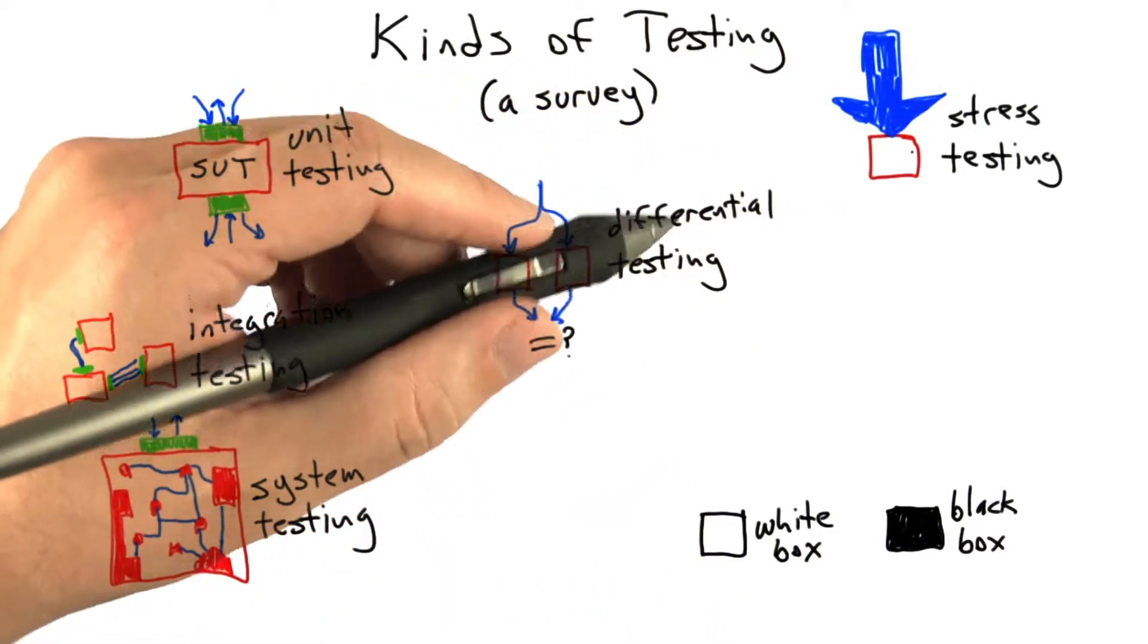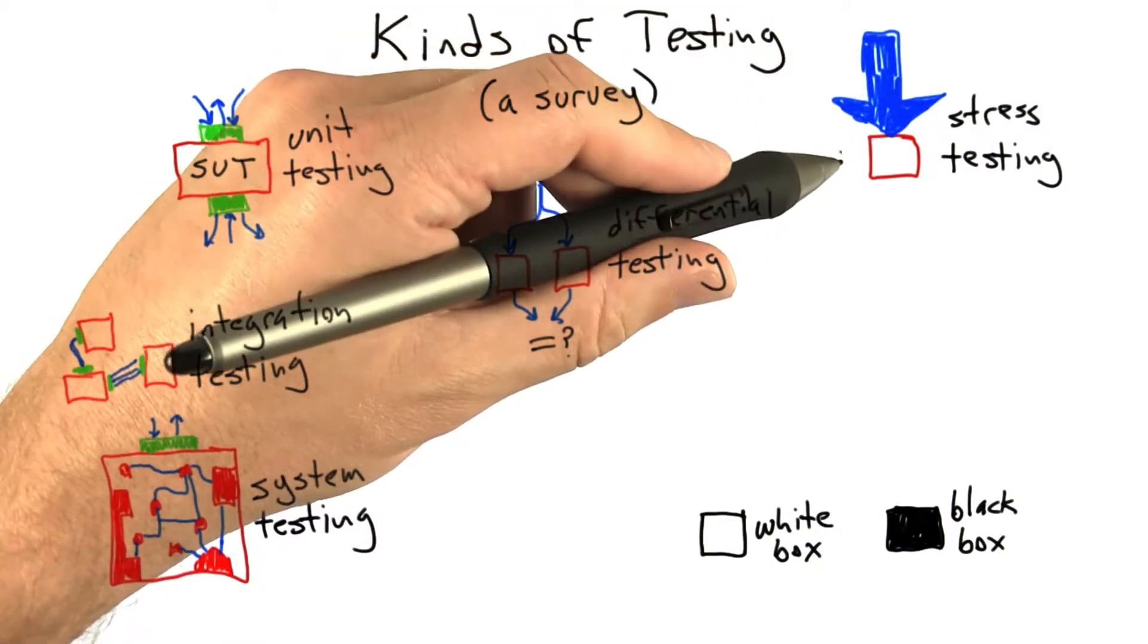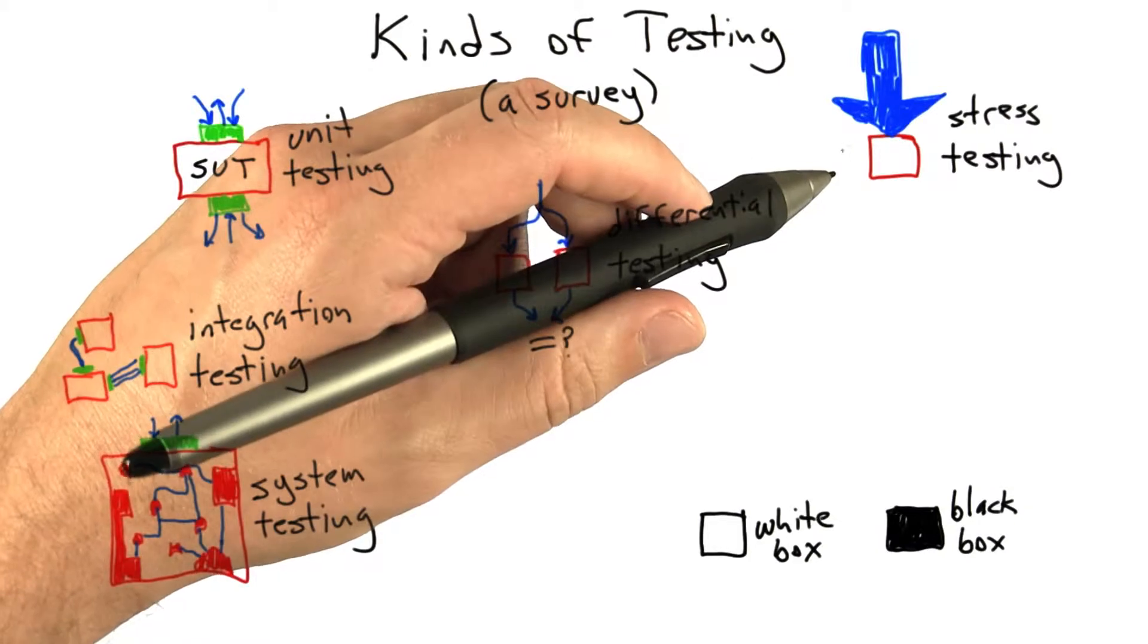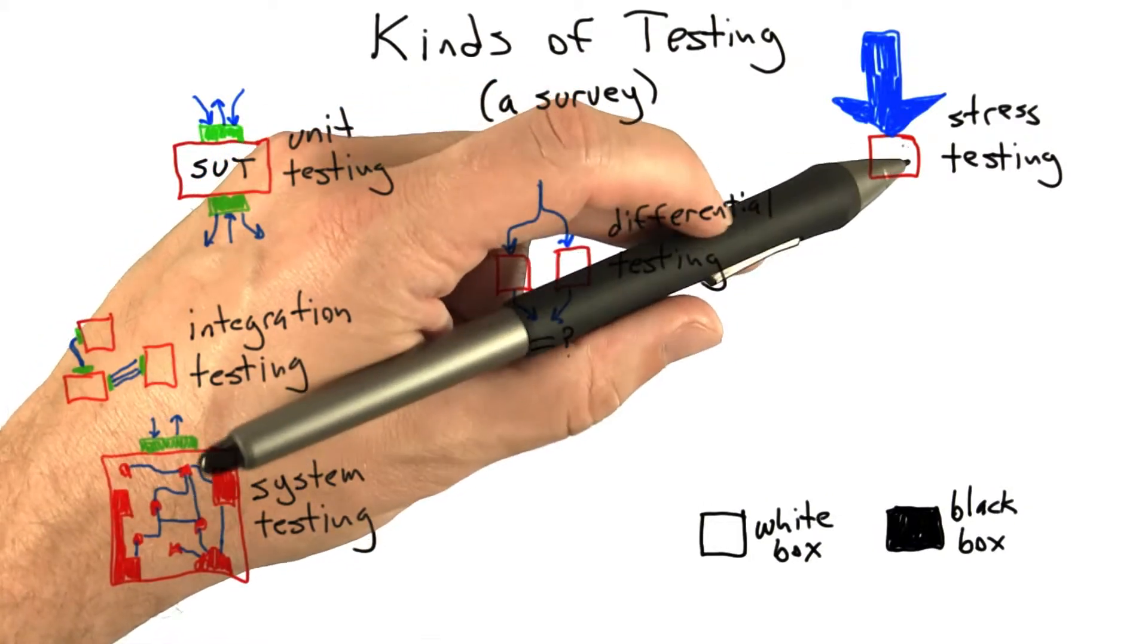Stress testing is a kind of testing where a system is tested at or beyond its normal usage limits, and it's probably best described through a couple of examples. For example, with a square root function, we might test it with very large numbers or very tiny numbers.